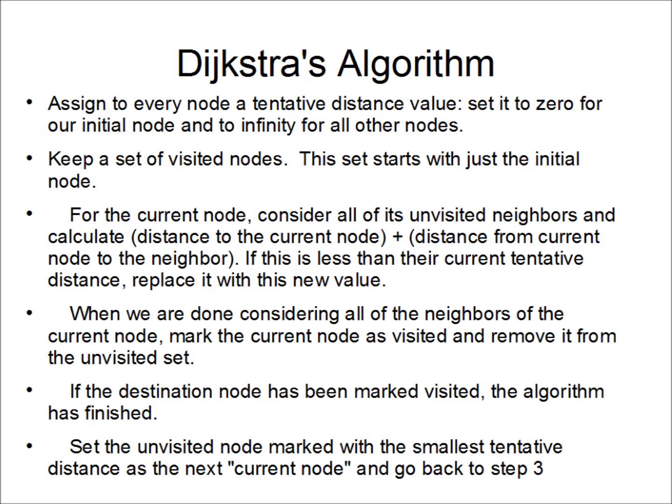Dijkstra's algorithm assigns a tentative distance value to every vertex or node. It makes it zero for the initial node and infinity for the rest of the nodes. It also creates a visited set, which initially just has the starting node, and an unvisited set, which starts with the rest of the nodes.